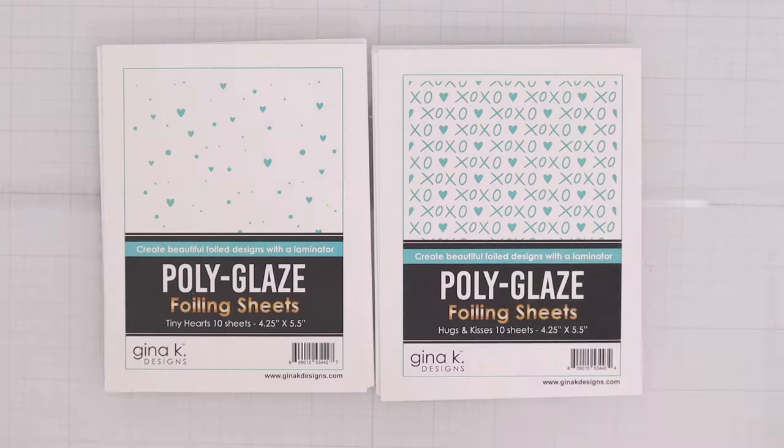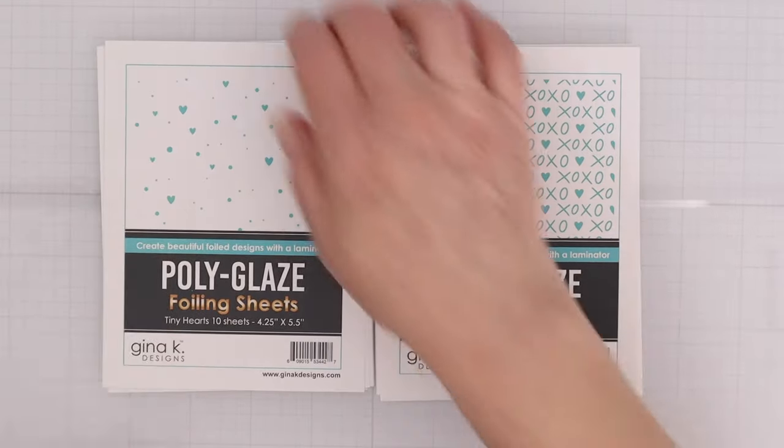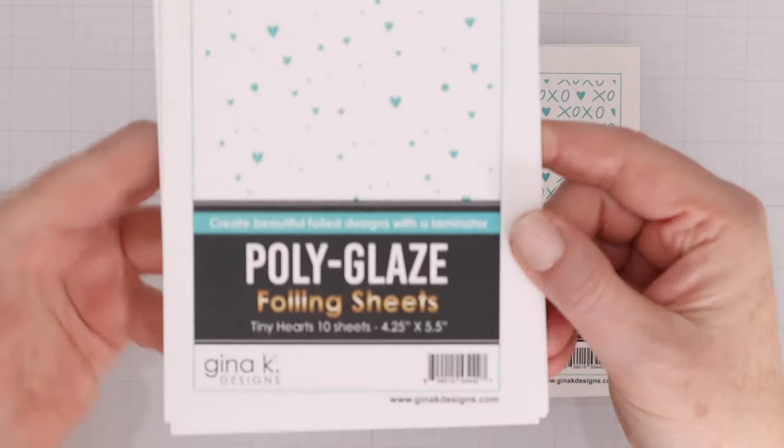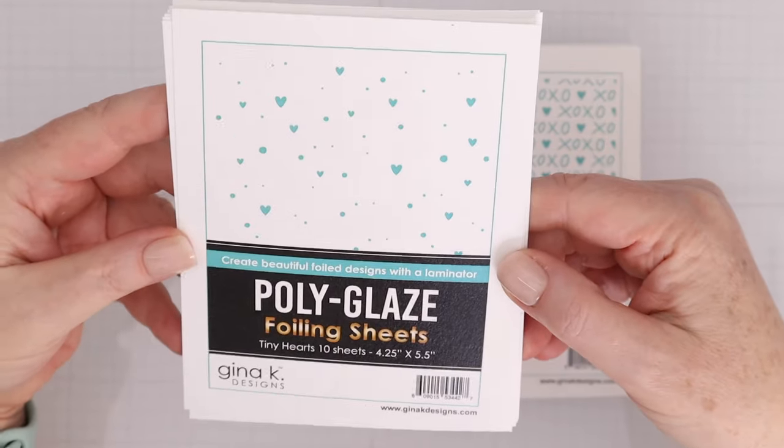First, let's take a look at the difference between the polyglaze foiling sheets and the foil mates and how to use them to create backgrounds and sentiments. Here are the two new polyglaze foiling sheet sets. They are both four and a quarter by five and a half.